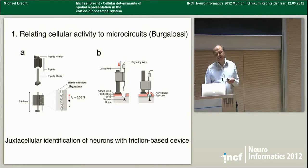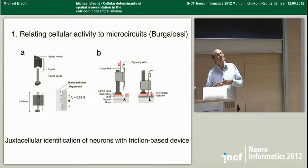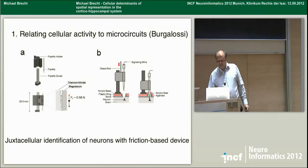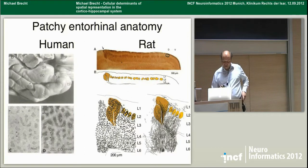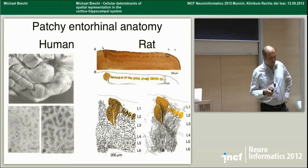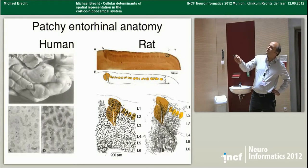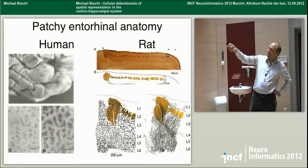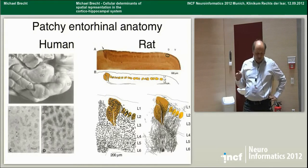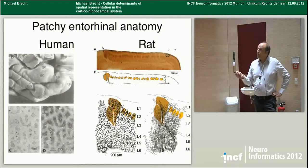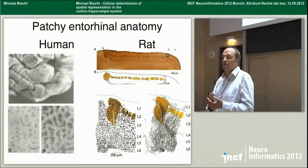We'll use this technique to ask how microcircuits of cells in the entorhinal cortex look, in particular head direction and grid cell information. The idea is that these cells are mixed in entorhinal cortex. Before getting into it, some anatomy background: in the human temporal lobe, this is the entorhinal cortex. This brain structure is incredibly patchy — there are half-millimeter islands containing about 3,000 cells. In each hemisphere we find 100 to 300 of these little islands, and in between there are basically zero cells. As far as I know, this is the patchiest cortical structure ever described.